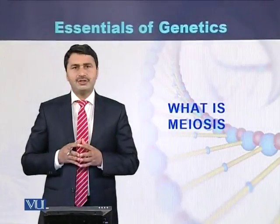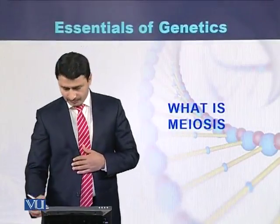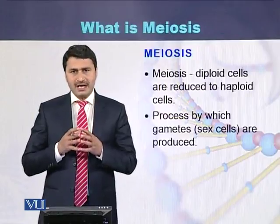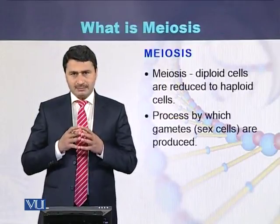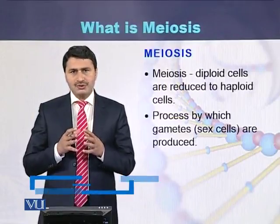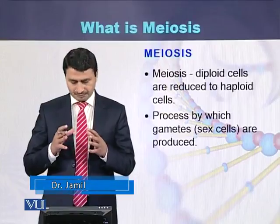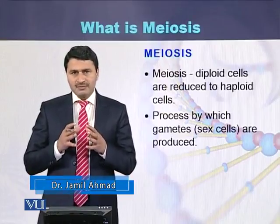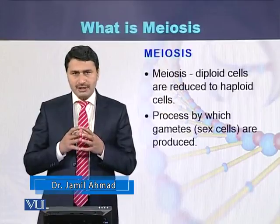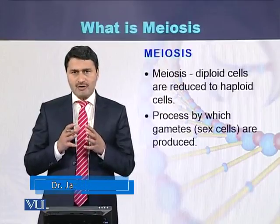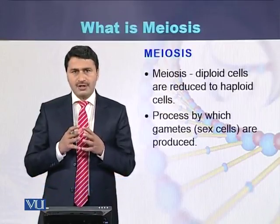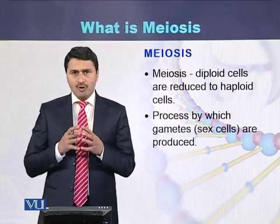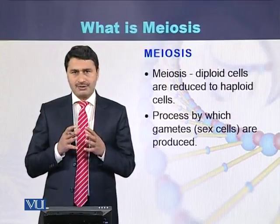What is meiosis? Meiosis is a process by which diploid cells are reduced to haploid cells. It is a process by which gametes are produced. In the case of males, sperms are produced, while in the case of females, ova or eggs are produced.